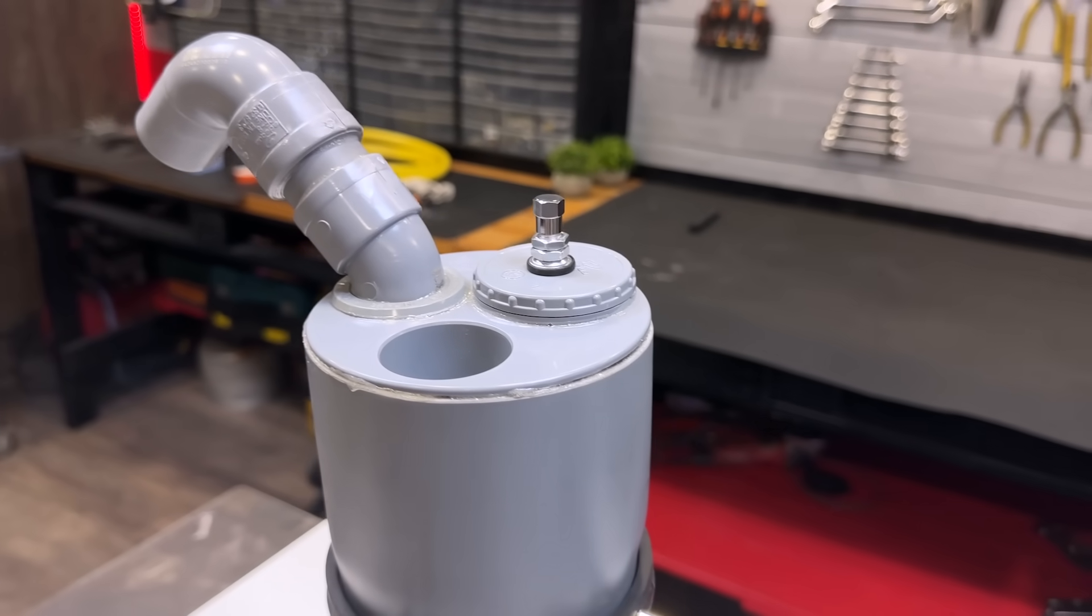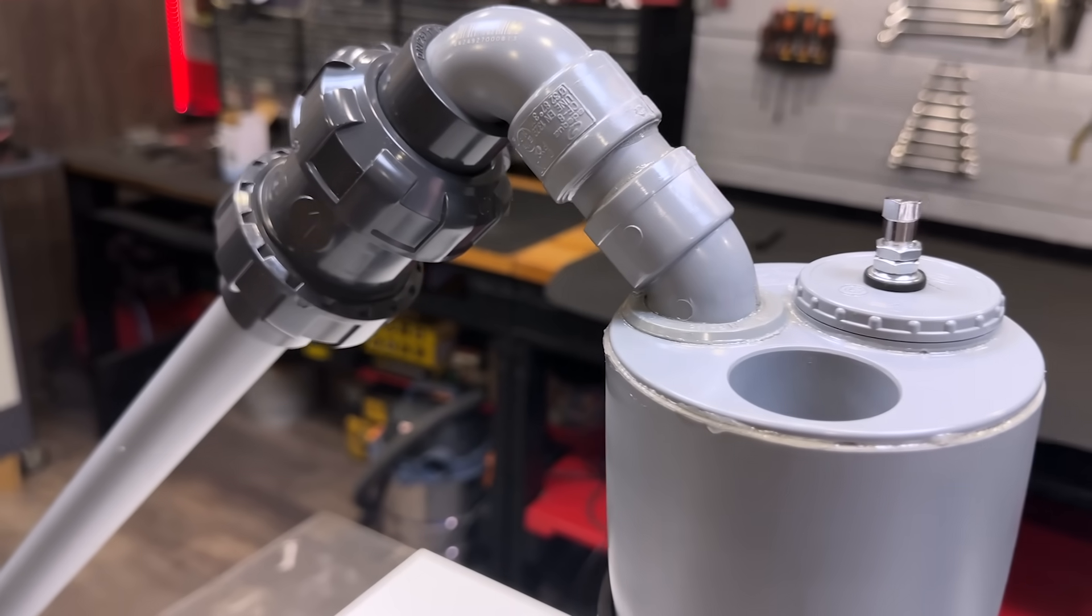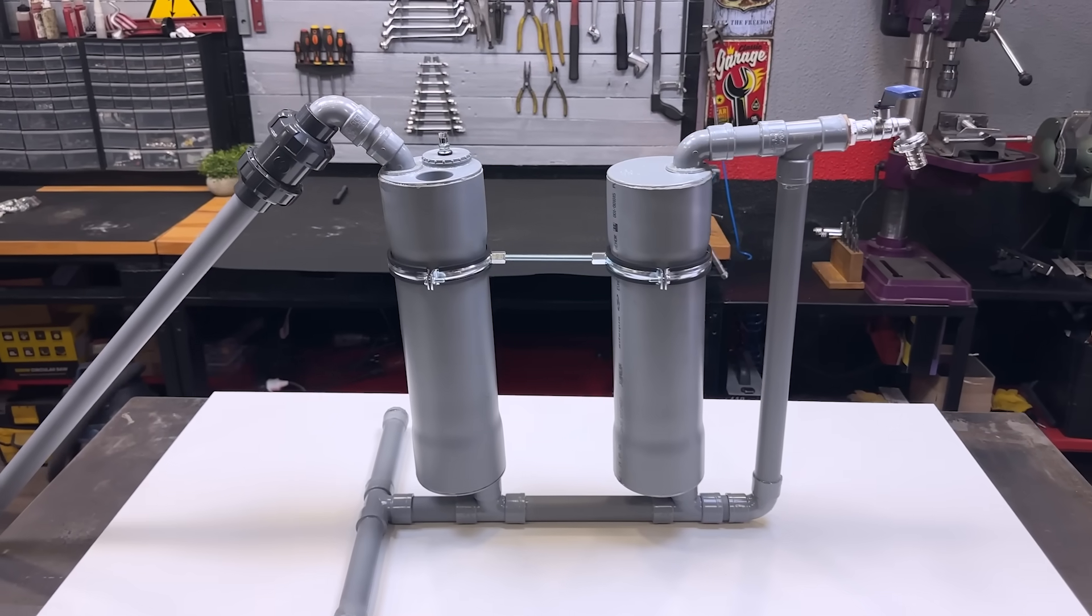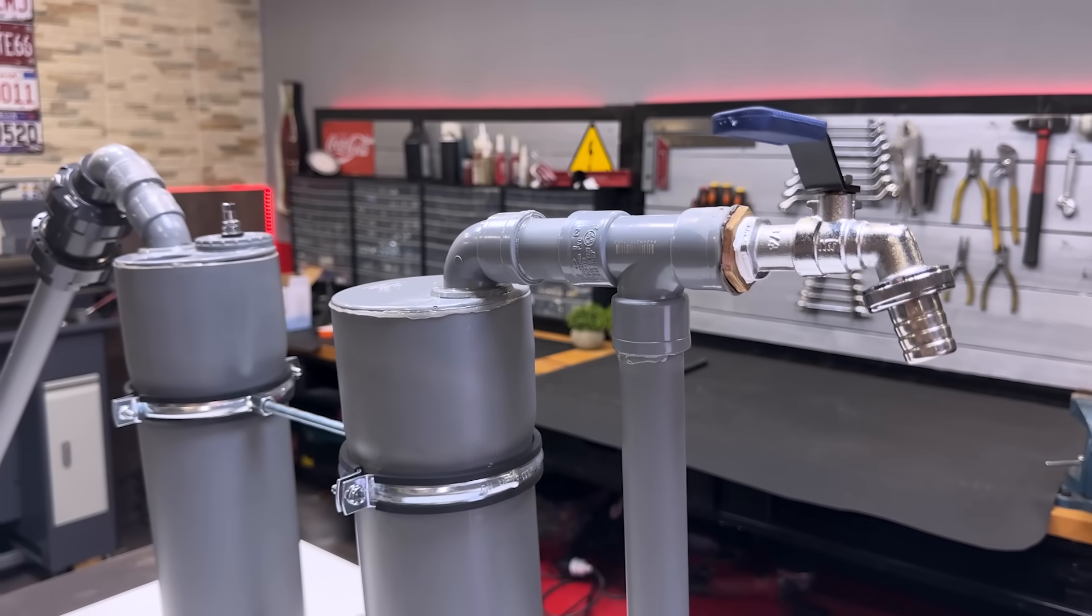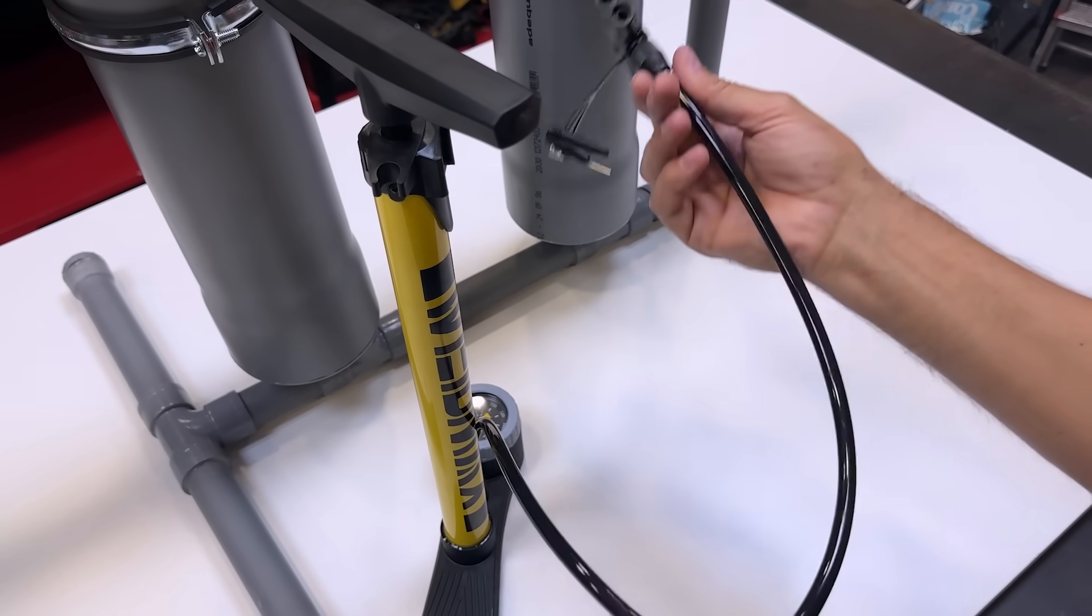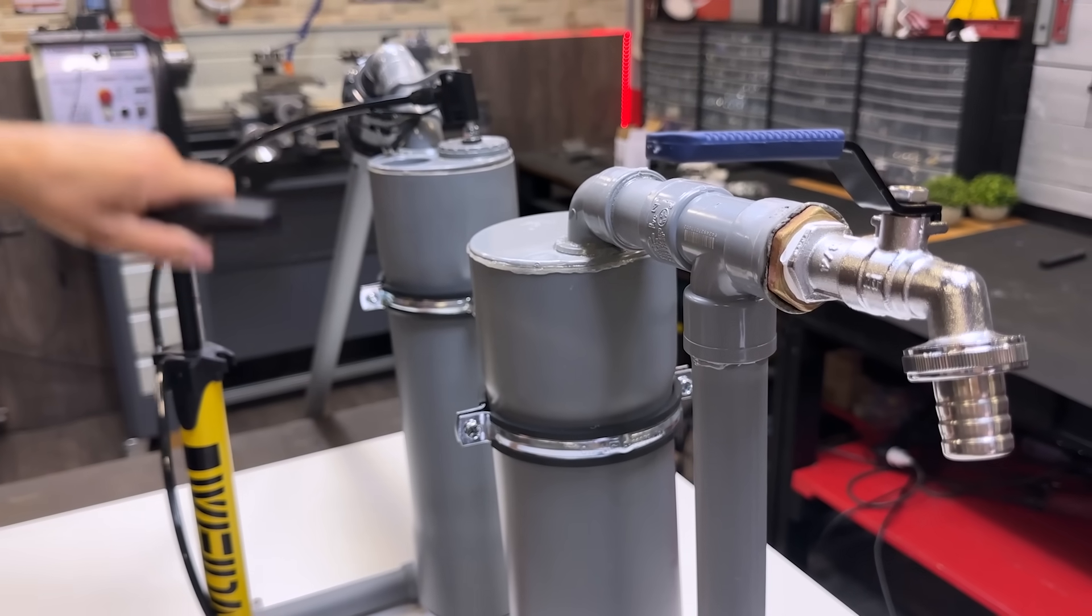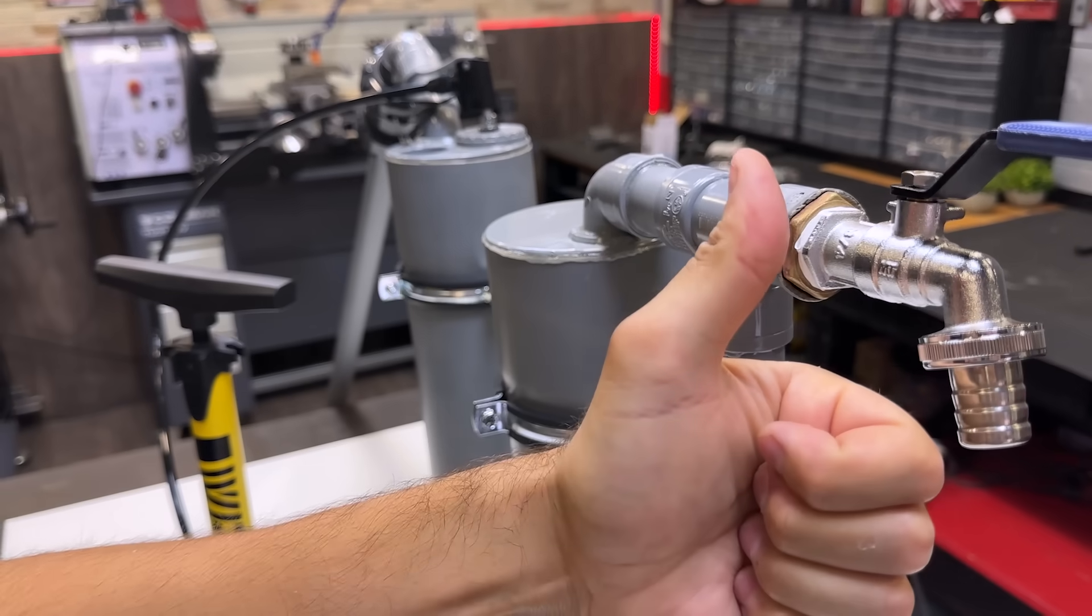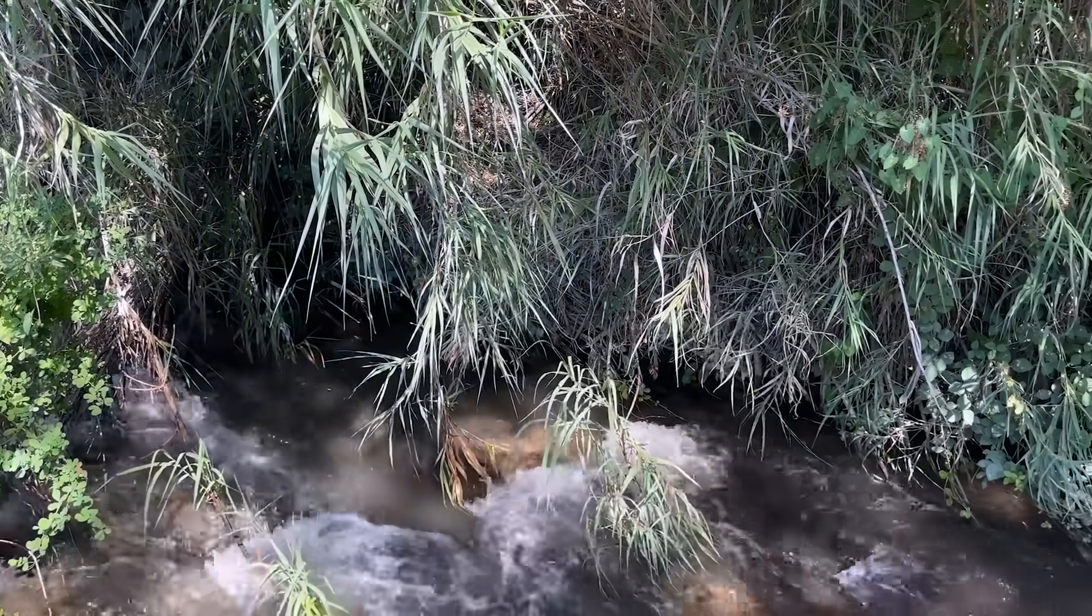Now we attach this assembly to the water inlet of our pump. Let's see if it stores the pressure. Let's test it outdoors. Let's explain the operating principle of the HCPL-1.